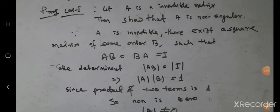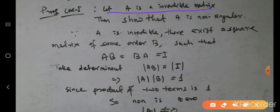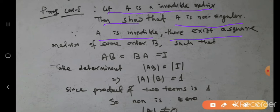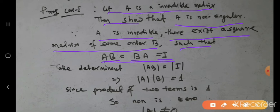Proof — Case 1: Let A be an invertible matrix, then show that A is a non-singular matrix. Since A is an invertible matrix, as per the definition of invertible matrix, there exists a square matrix B of the same order such that AB = BA = I. This is the definition of invertible matrix.